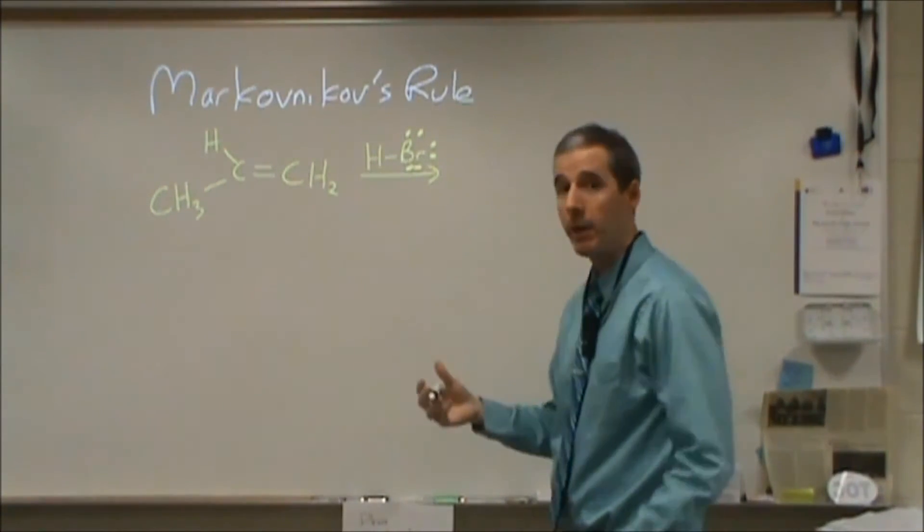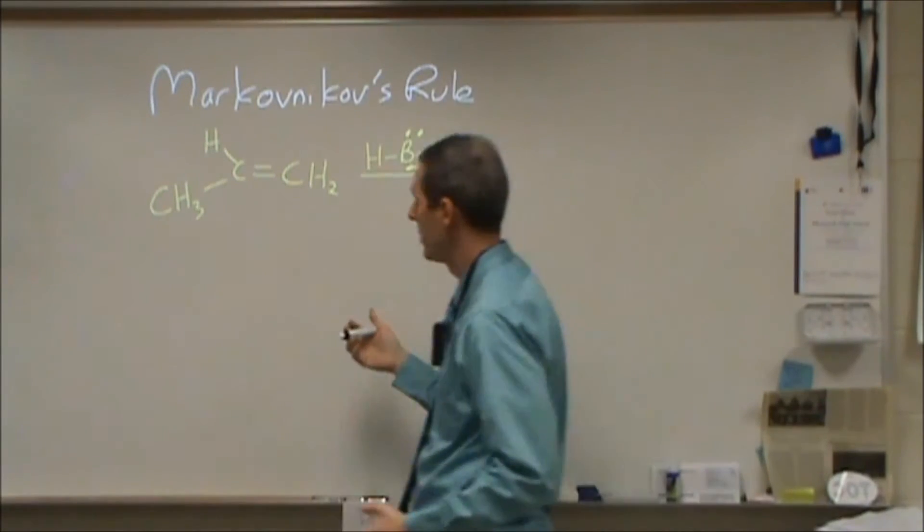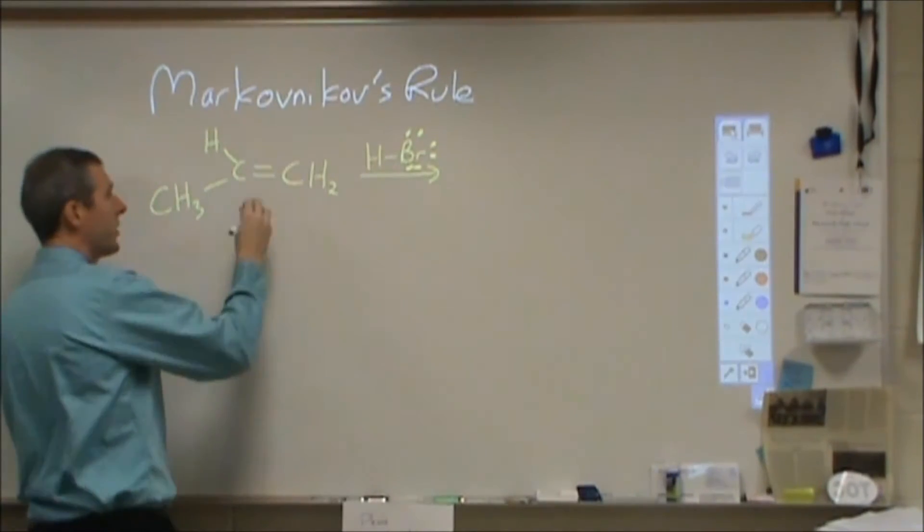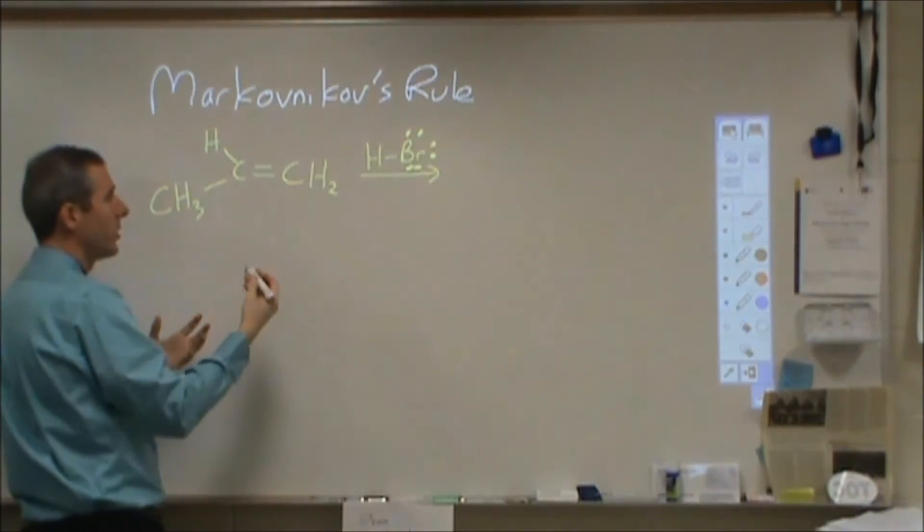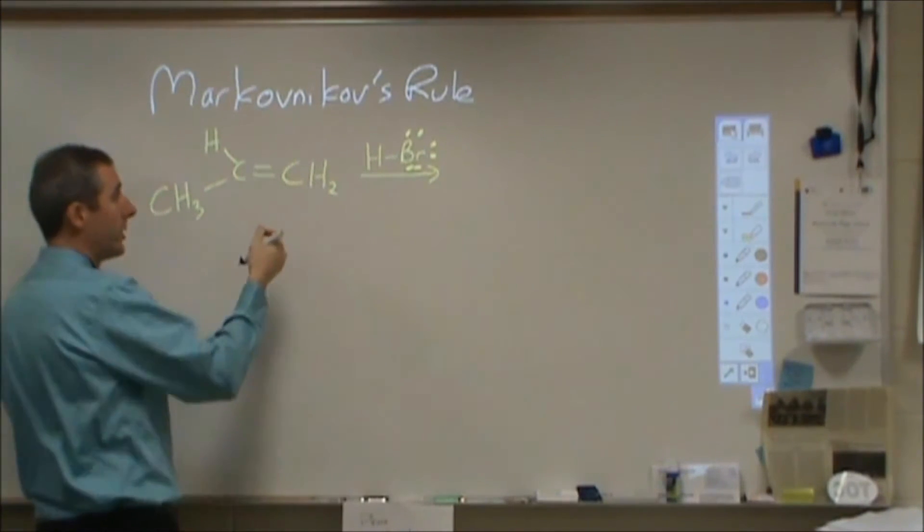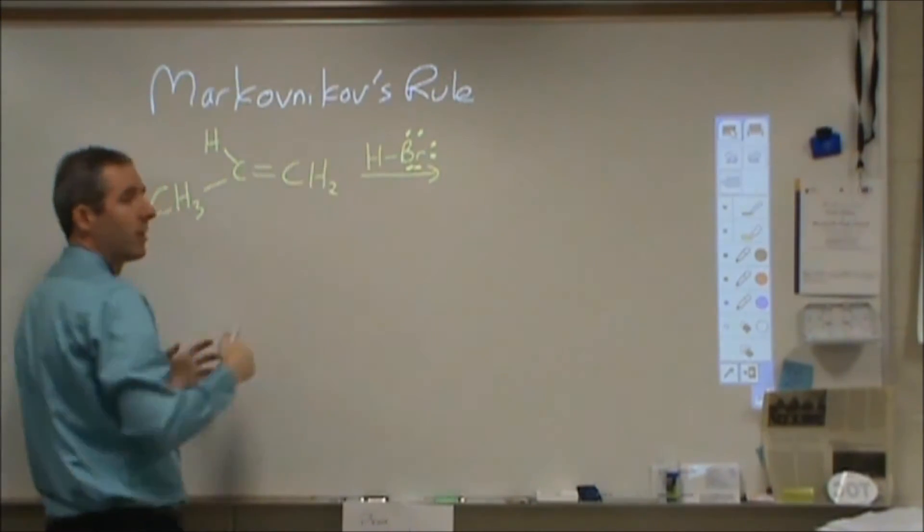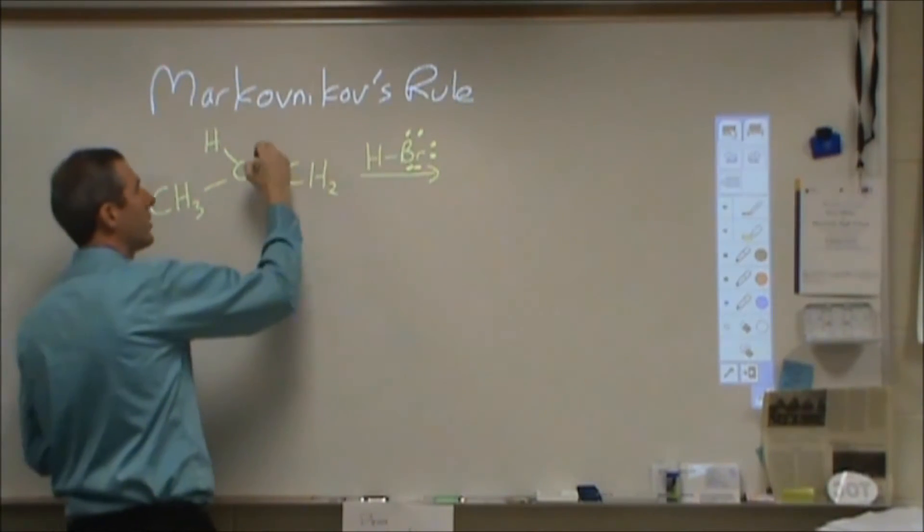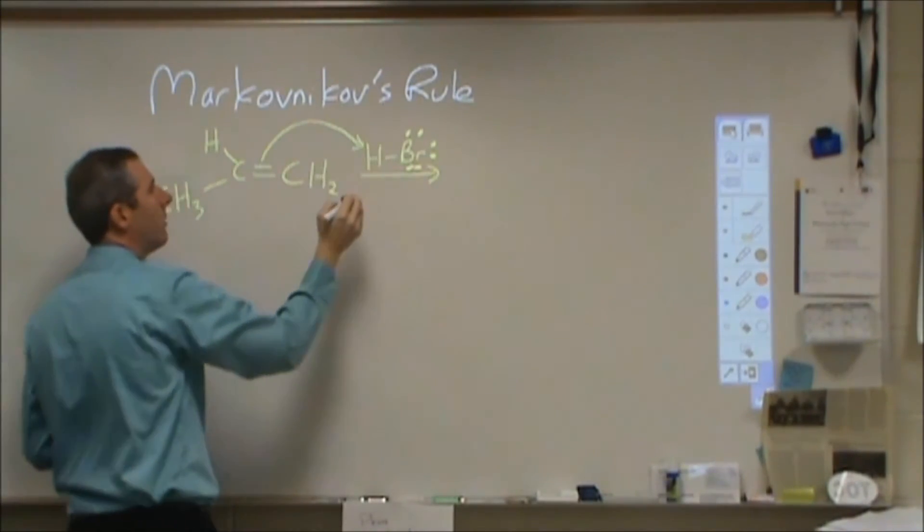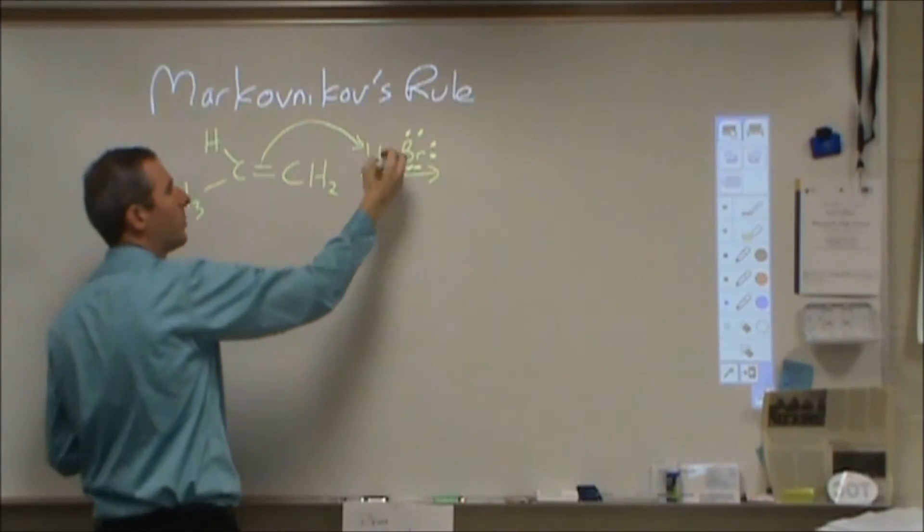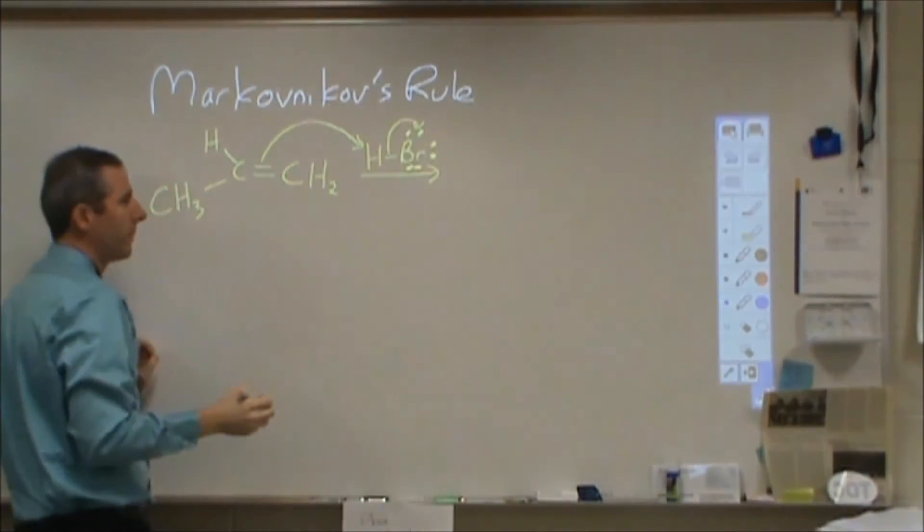The double bond is nucleophilic—it's a source of electrons, and because of pi bonding, it's easy to initiate a reaction. It's important to note that in all these reactions, we're seeking out something positively charged. This reaction starts where the double bond forms a bond with H+, and the electrons remain with the bromine.